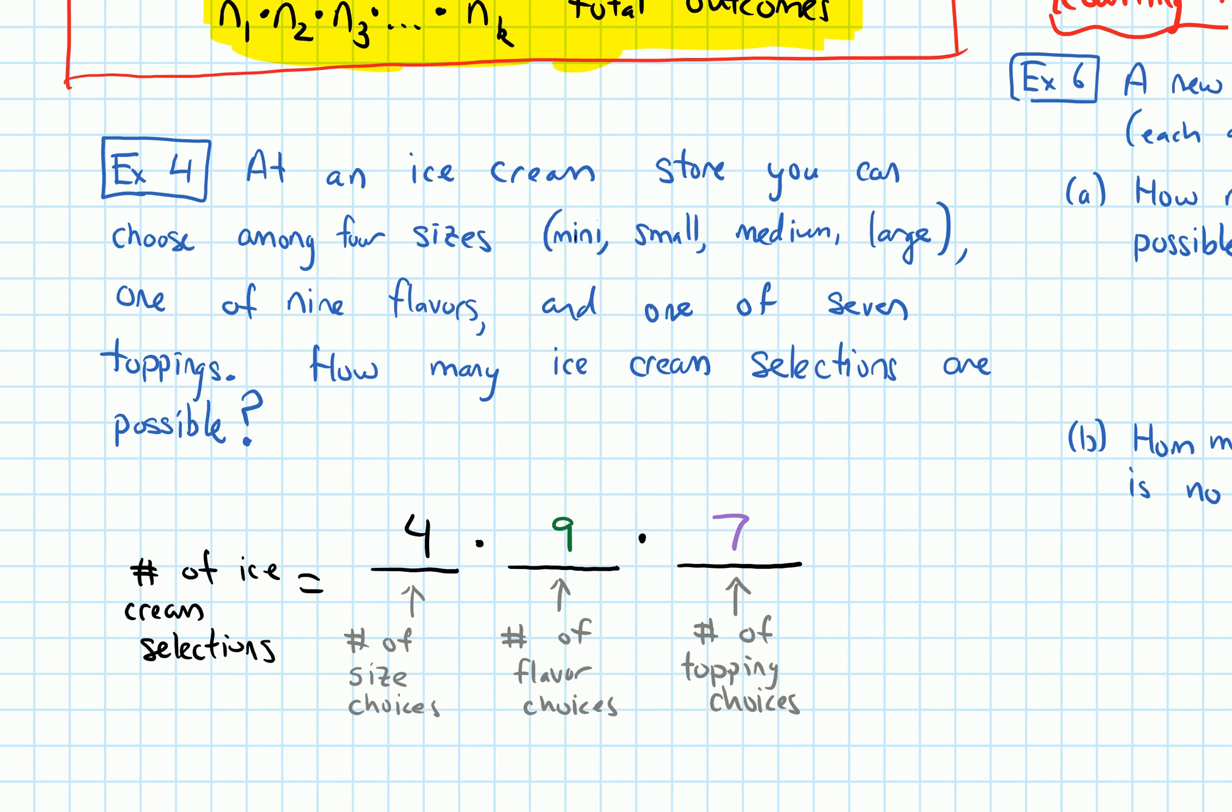And notice that if I think about these sequentially, regardless of what we pick for the size, we are going to have nine choices for flavor. And regardless of what we pick for the size and for the flavor, we're still going to have seven choices for the topping. And that's the condition that we needed for the multiplication principle.